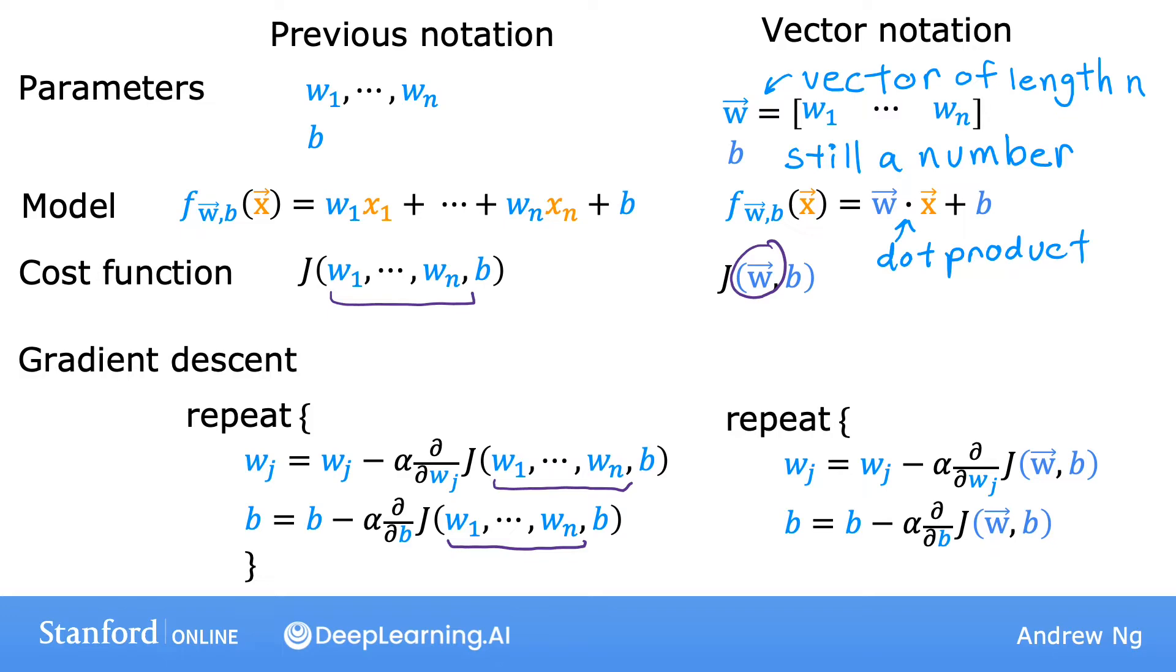And once again, we just write this as J of vector w and number b. Let's see what this will look like when you implement gradient descent. And in particular, let's take a look at the derivative term.